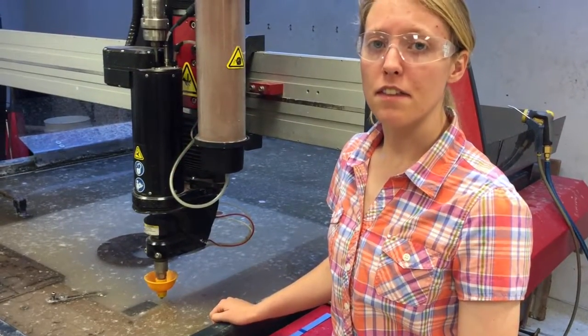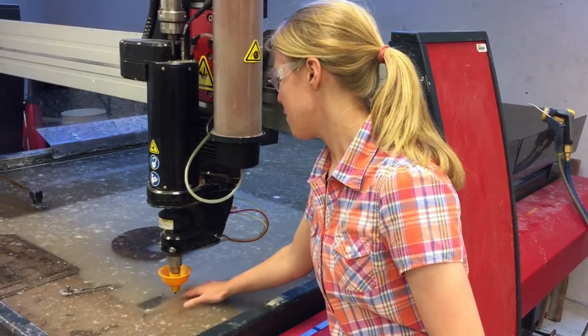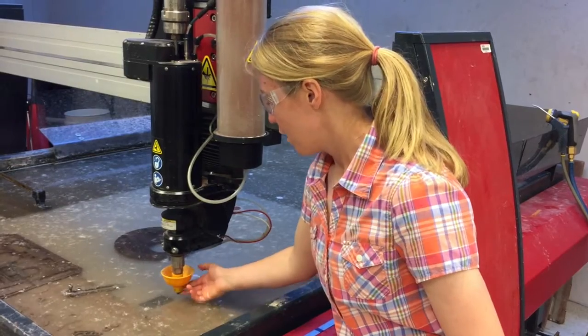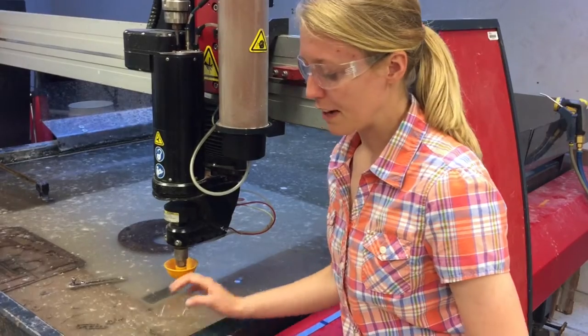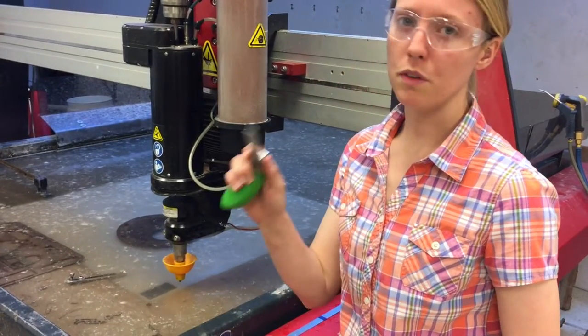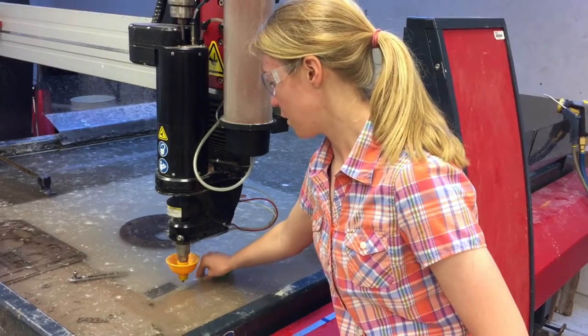So the next step is to set the Z height, which is the height above the top of your material. So you want to get it very close, but not touching your piece. And in order to get that distance, we have a tool you can use to measure the distance between the nozzle and the piece.